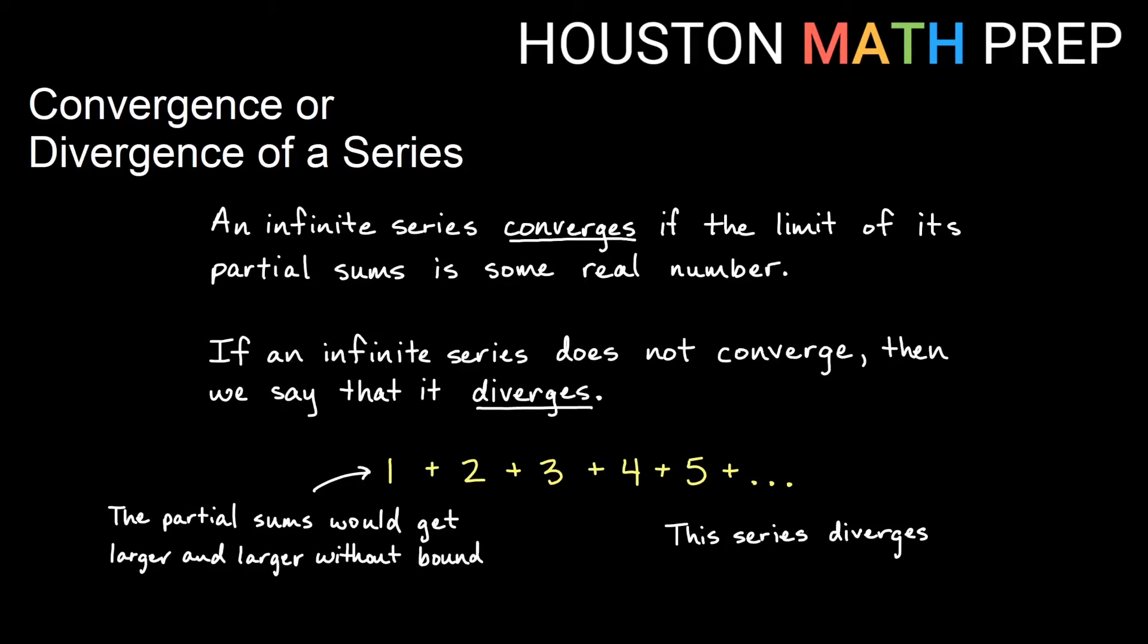We say that an infinite series converges if the limit of its partial sums is some real number. As I keep taking the sum of more and more terms, if that number seems to be approaching some real number, then we say that that series converges. And if an infinite series does not converge, in other words, its partial sums do not approach, get really close to some real number, then we say that that series diverges.